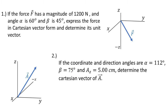Good day everyone. We will now solve an example of Cartesian vector. So let's read the problem first. If the coordinate direction angles alpha is equal to 112 degrees, beta is equal to 75 degrees, and Az is equal to 5.0 cm, determine the magnitude and the Cartesian vector A.